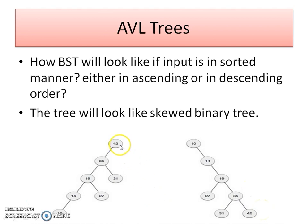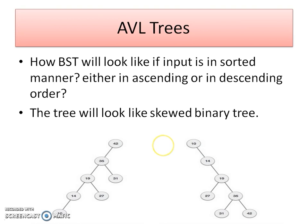That may be a left skewed binary tree or a right skewed binary tree. If the data you are inserting is in descending order, the tree will be a left skewed binary tree. If the data is in ascending order, the tree will be a right skewed binary tree. In this case, there are a lot of problems — the time efficiency of the binary search tree will be less.